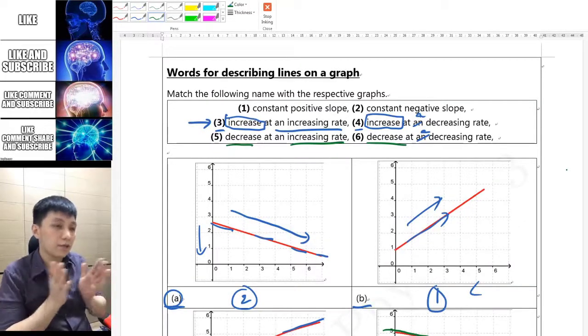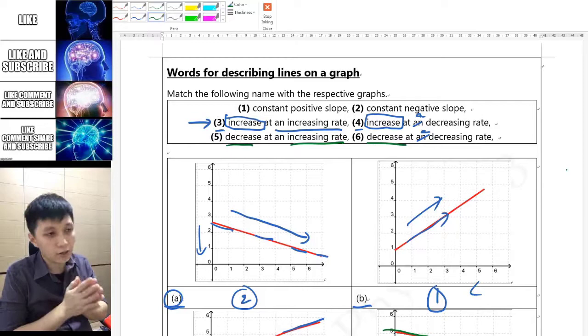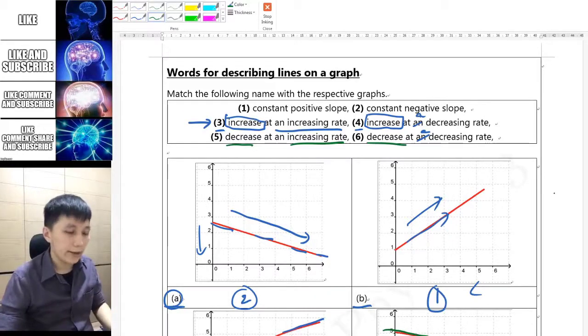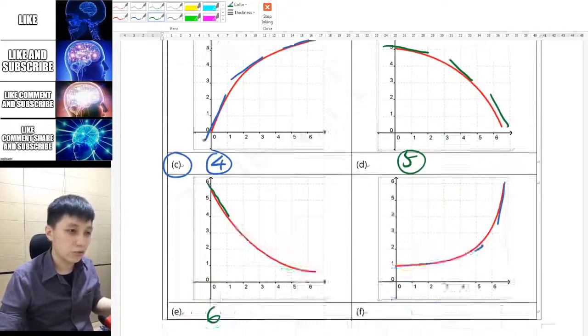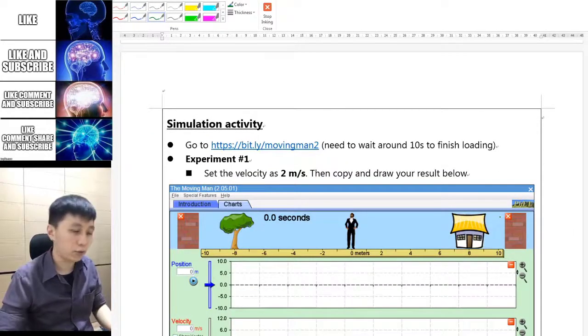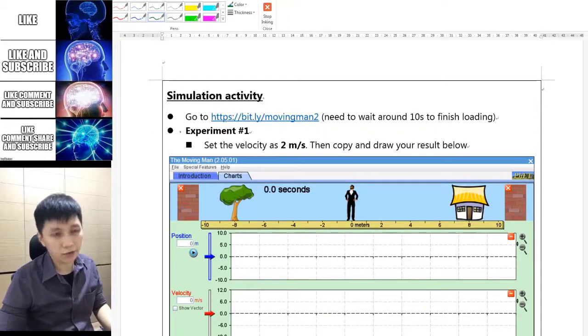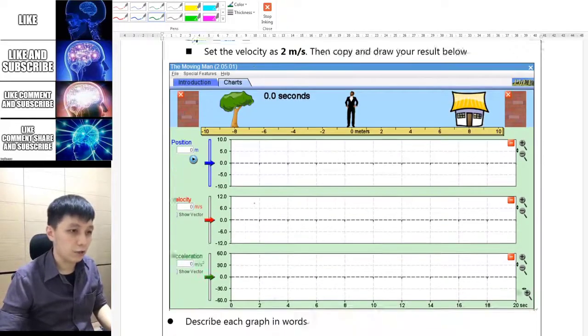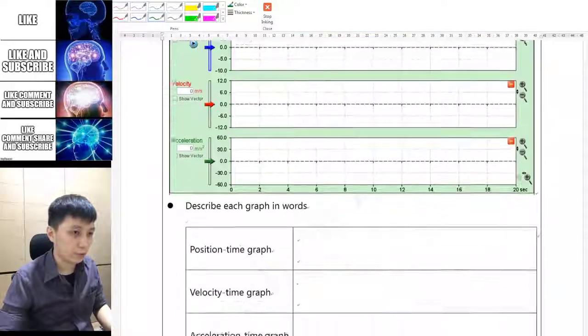All right, so here you have it. Now you know how to describe the lines on the graph with these simple wordings. If you are okay with that then you can move on to the next simulation activity on your own. You just have to follow my instruction on the note and you should be able to finish one, two, three...